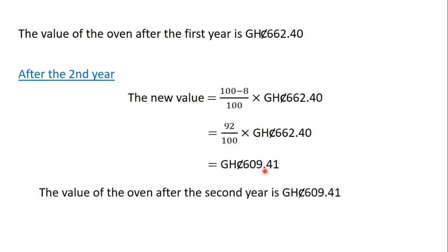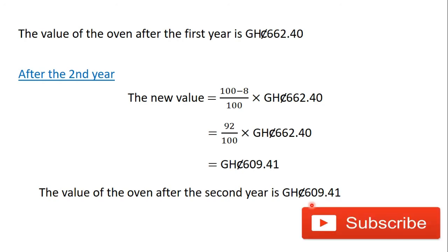So after the second year, the value of the oven is 609 Ghana cedis and 41 pesewas. Thank you for watching this video. Subscribe to this channel for more videos. In the next video we are going to solve another practical problem involving depreciation. Bye bye.